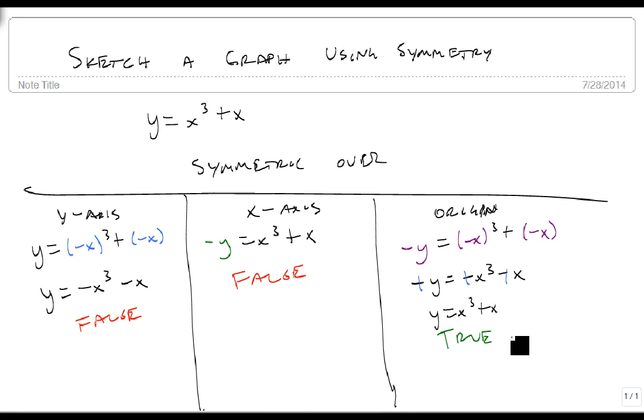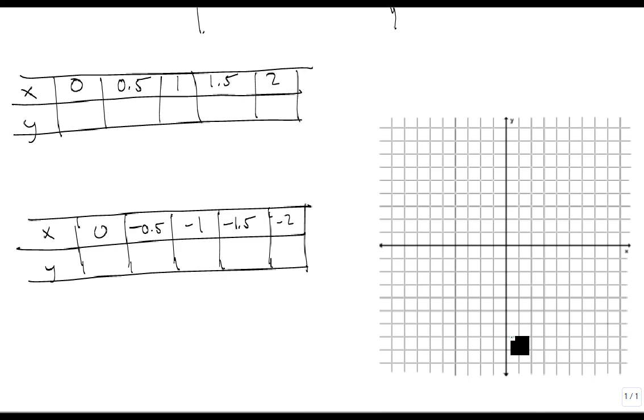So now that I know it's symmetric over the origin, all I need to do to graph it is to find some points, some values that make this true. And so we're going to start with this set: 0, 0.5, 1, 1.5, and 2. And I picked these in particular because they're going to help with the graph.